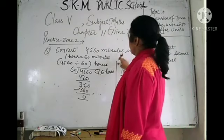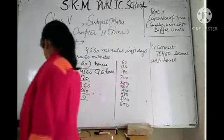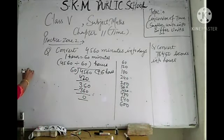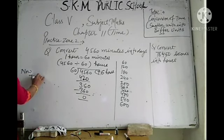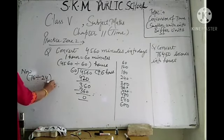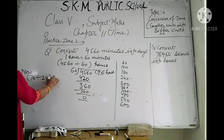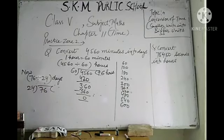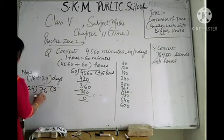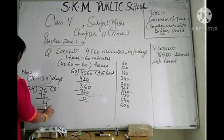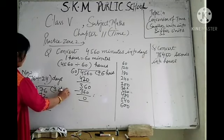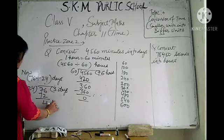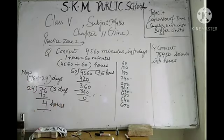Now you are going to convert these 76 hours into days. When these 76 hours are divided by 24, you will get the time in days. Divide 76 by 24: 24 times 3 is 72. So you get 3 days and a remainder of 4, which are 4 hours. The answer is 3 days and 4 hours.